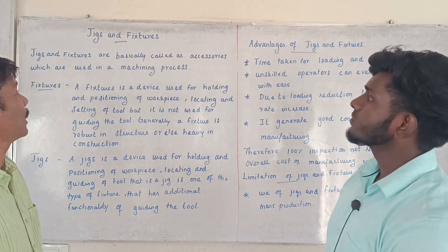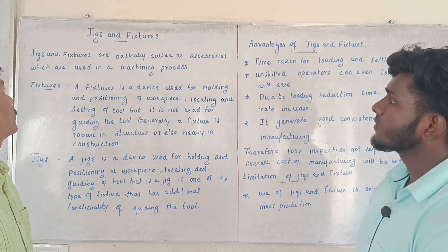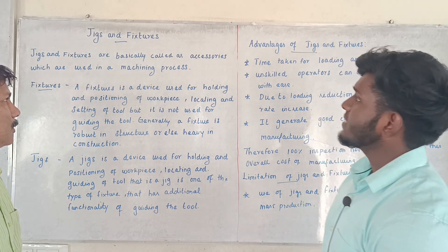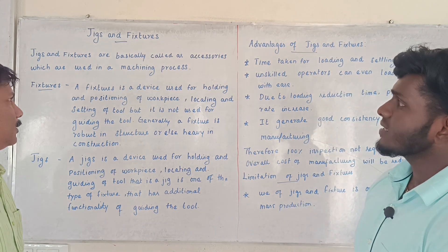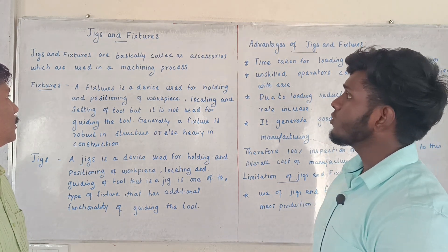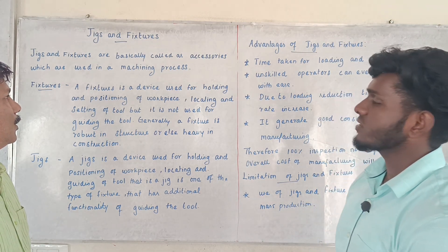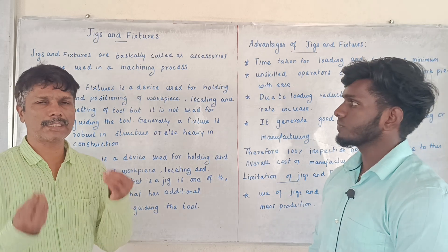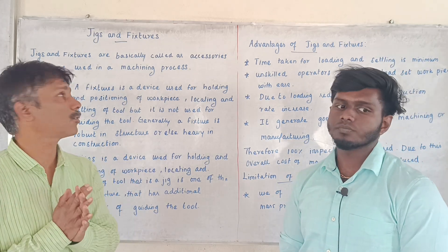What are Jigs and Fixtures? Jigs and Fixtures are basically called accessories which are used in the machining process. Accessories used in the machining process can be referred to as Jigs and Fixtures.